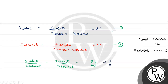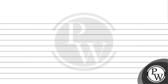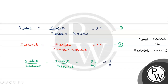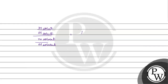So number of moles of solute by number of moles of solvent equals 1 upon 9. Now, number of moles is basically equal to mass divided by molar mass. So mass of solute by molar mass of solute, divided by mass of solvent by molar mass of solvent, equals 1 by 9.